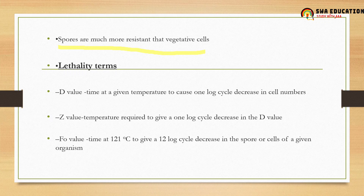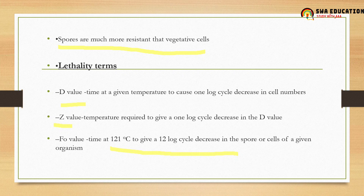This is an important part — you usually get at least one question on this. The D value is the time at a given temperature to cause one log cycle decrease in cell numbers. The Z value is the temperature required to give one log cycle decrease in the D value. The F0 value is the time at 121°C to give a 12 log cycle decrease in spores or cells of a given organism. To remember: D value deals with time, Z value deals with temperature, and F0 value is time at 121°C.